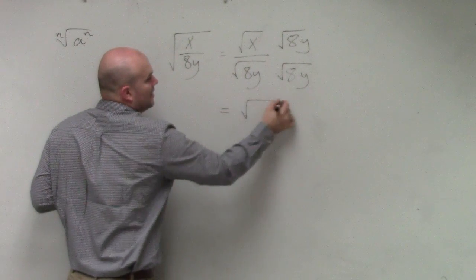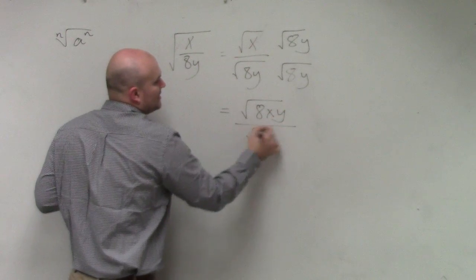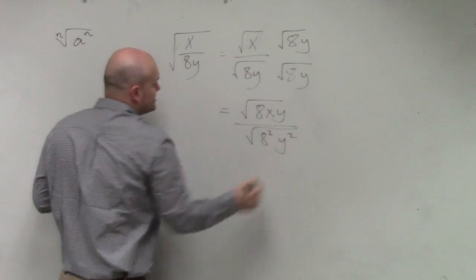So now I can multiply my radicands. So in doing that, in my numerator, I obtain 8xy. In my denominator, I now obtain 8 squared y squared.